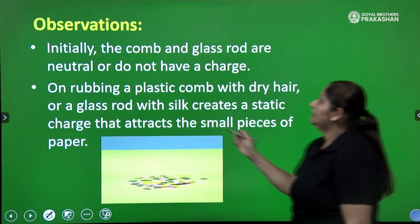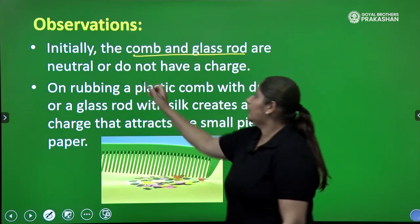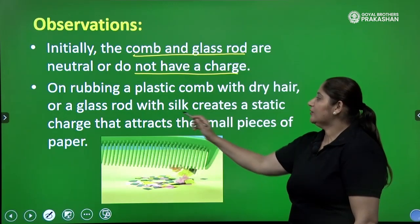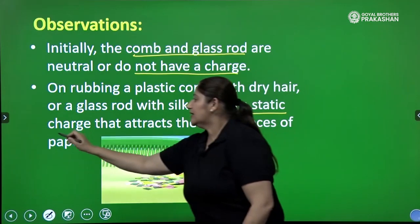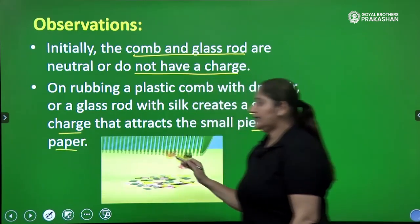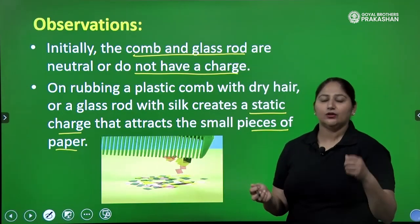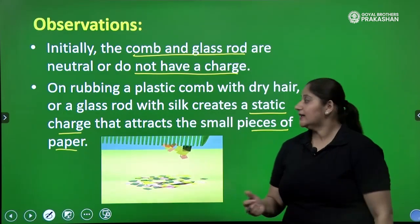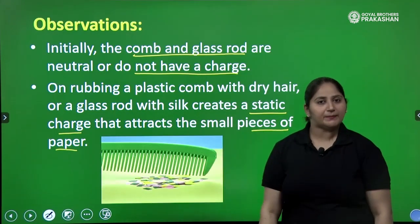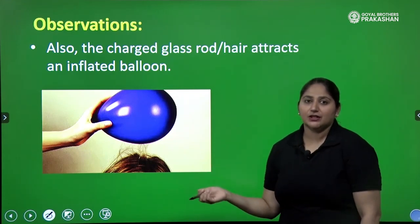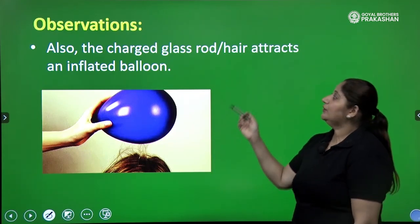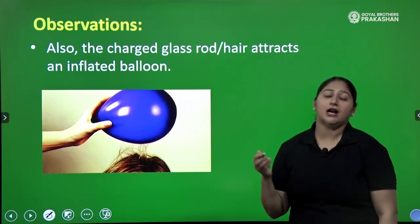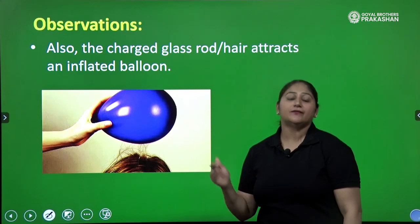What are the observations? Initially, the comb and the glass rod are neutral. They do not have any charge. But on rubbing the plastic comb with the dry hair or the glass rod with the silk, it creates static charge that attracts the small pieces of paper. We rubbed the comb on the dry hair. It created some charges on the particles and by which the comb is able to attract the pieces of paper. Also, the charged glass rod or hair attracts an inflated balloon. It clearly indicates there are charged particles present in atoms. Atom is further divisible.